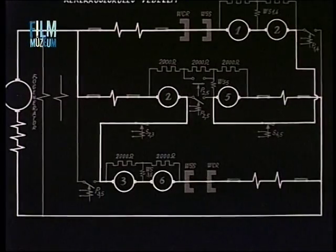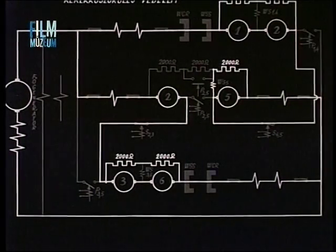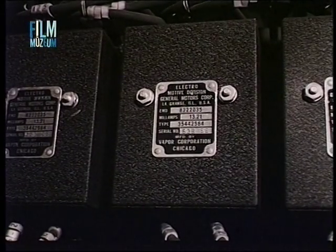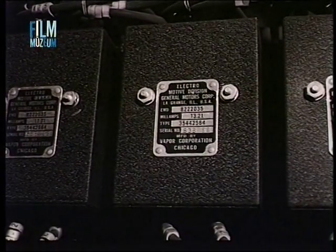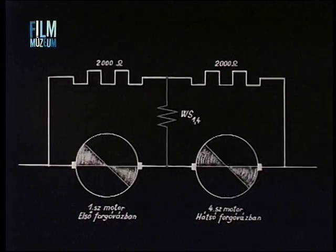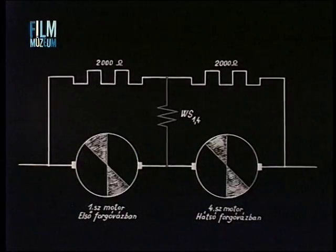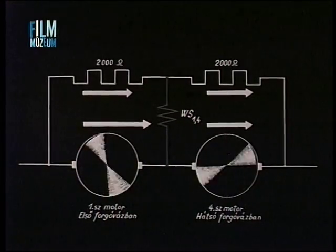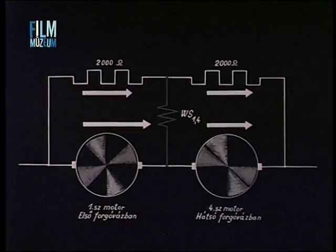If the wheel slip does not cease with the previous interventions, the WS-5, WS-1-4, and WS-3-6 relays activate. These relays are connected between the motors and the resistors connected in parallel with them. During wheel slip, the voltage balance is disrupted due to the increased counter-electromotive force of the faster-rotating motor, and current flows through the relay, activating it.